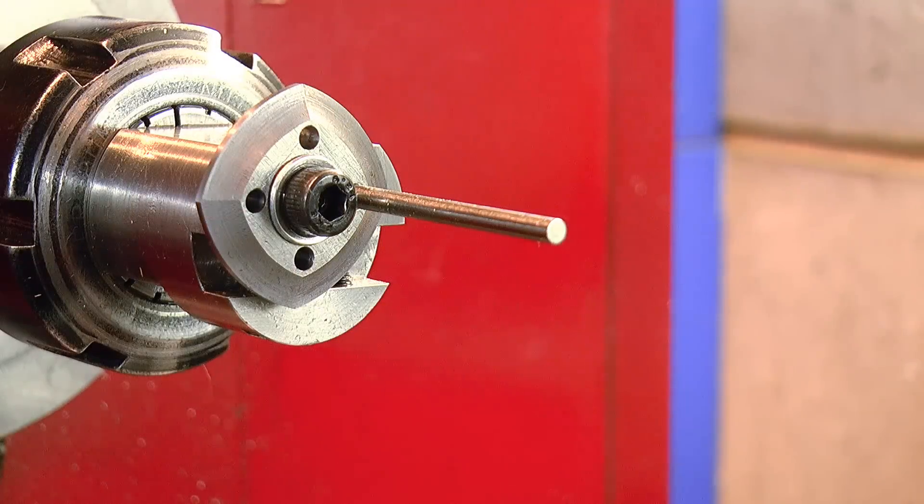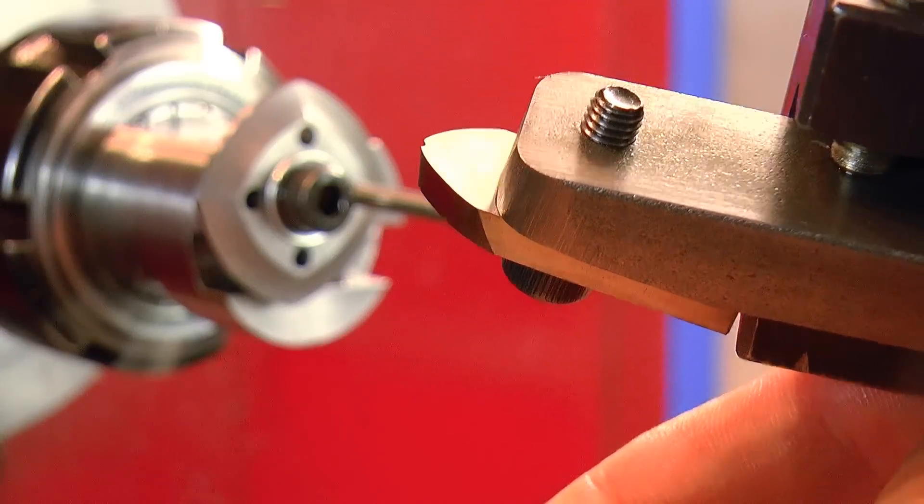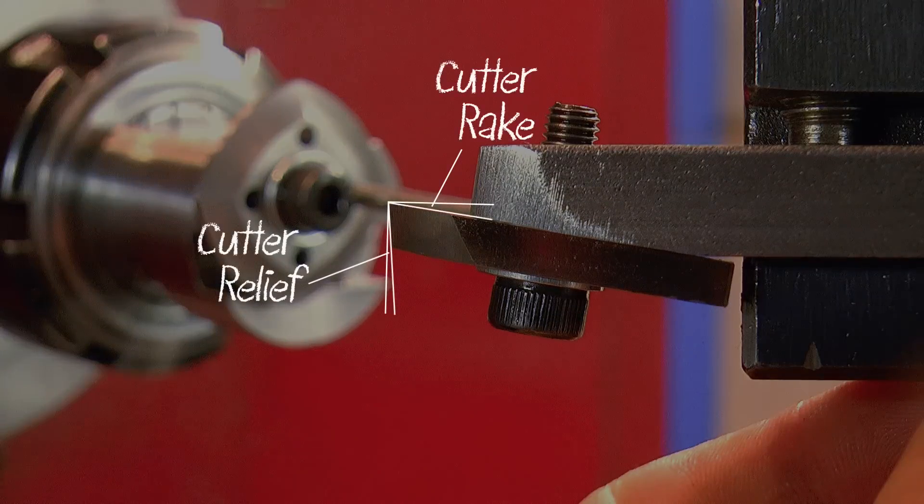Once hardened and tempered, the cutting tool can be mounted on the same shank used previously to hold the disc cutters. Again it kicks back the tool to give a bit of rake while still ensuring clearance.